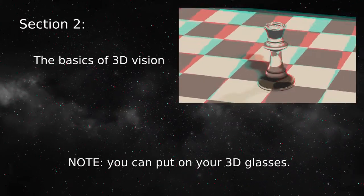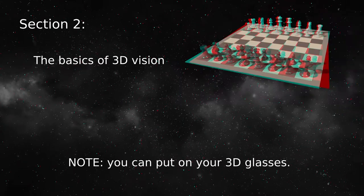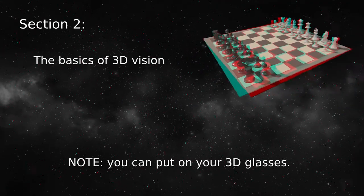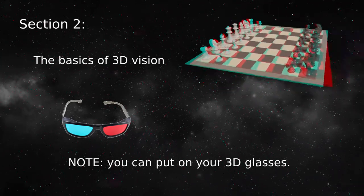It turns out we can provide our eyes with artificially created images and get the same 3D effect we get from nature. In the anaglyphic method, the left image is red and the right image is cyan, which means blue-green.